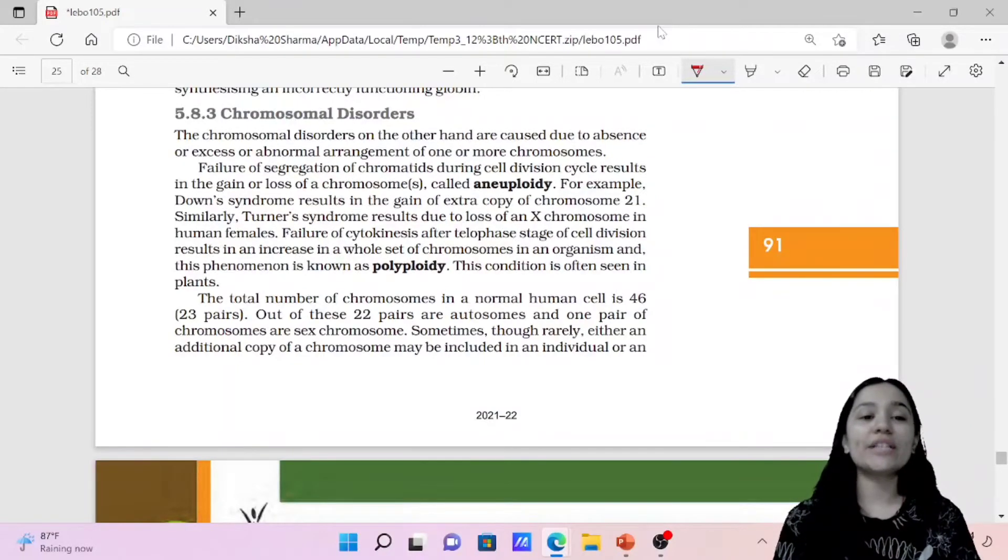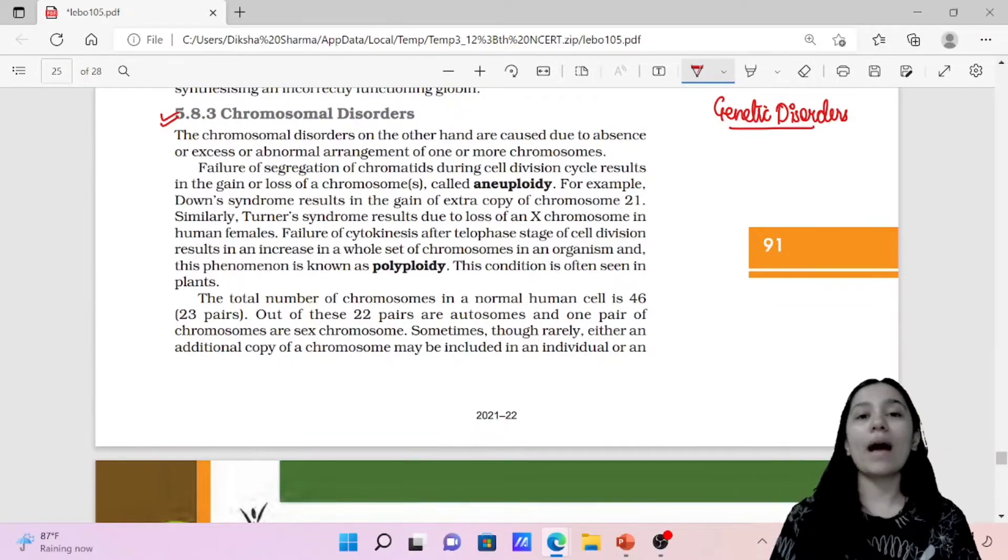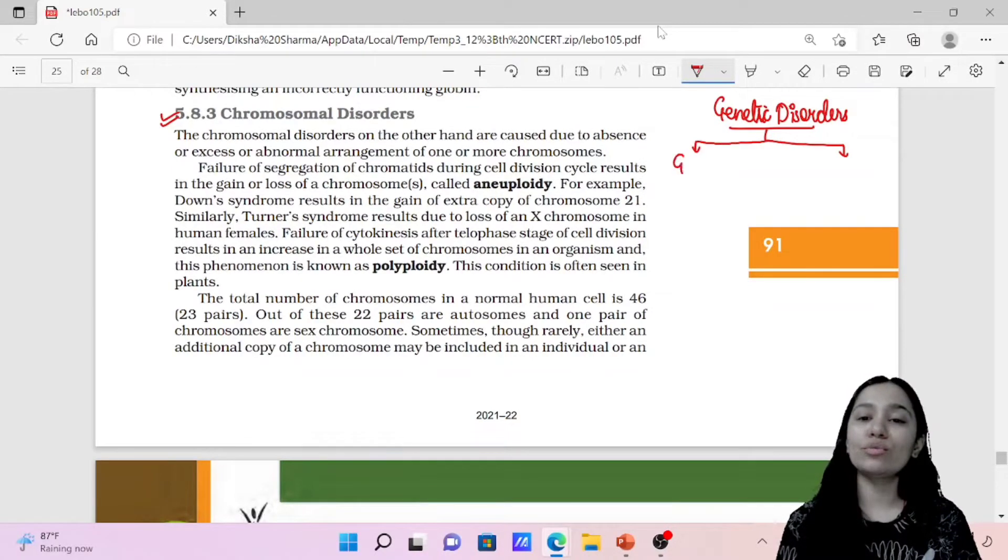So let's start today's topic, that is chromosomal disorder. When we have genetic disorders, how do genetic disorders pass on from one generation to the other generation? There are two ways. One is Mendelian rule and one is chromosomal rule. Through genes or Mendel has said through factors.